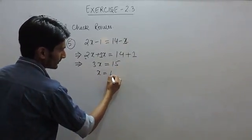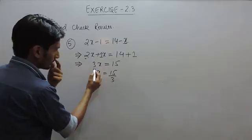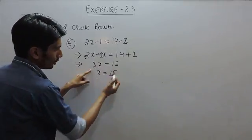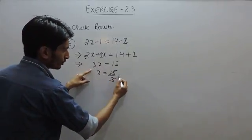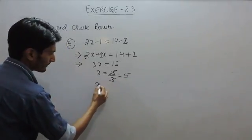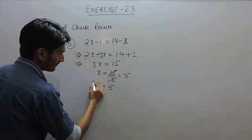So the value of x must be 15 upon 3, because here it is multiplying x so on right hand side it should divide 15. So it will come out to be 5. So the value of x is 5.